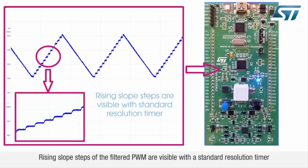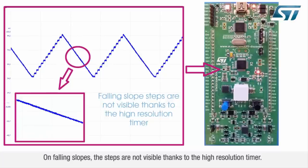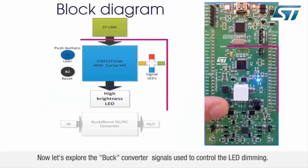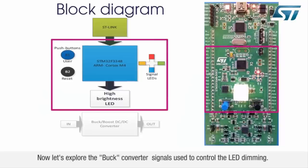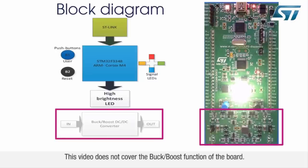Rising slope steps of the filtered PWM are visible with a standard resolution timer. On falling slopes, the steps are not visible thanks to the high-resolution timer. Now let's explore the buck converter signals used to control the LED dimming. This video does not cover the buck-boost function of the board.